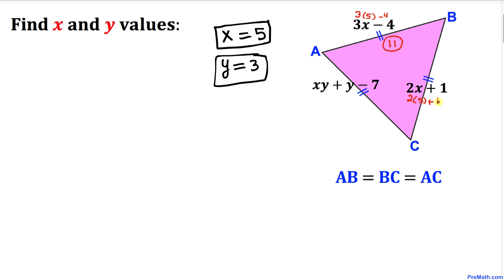This one over here is 2 times 5 plus 1, so 10 plus 1 is 11 as well. Finally, for side AC, if we replace x with 5 and y with 3, we get 15 plus 3 minus 7, which once again gives us 11.